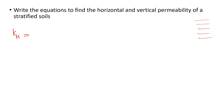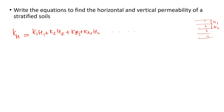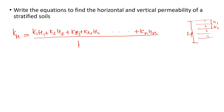If you look at the strata layers 1, 2, 3, 4 with permeabilities K1, K2, K3 and thicknesses H1, H2, H3, H4 — the horizontal permeability Kh is: Kh = (K1·H1 + K2·H2 + K3·H3 + K4·H4) divided by total H. This is the horizontal permeability equation.